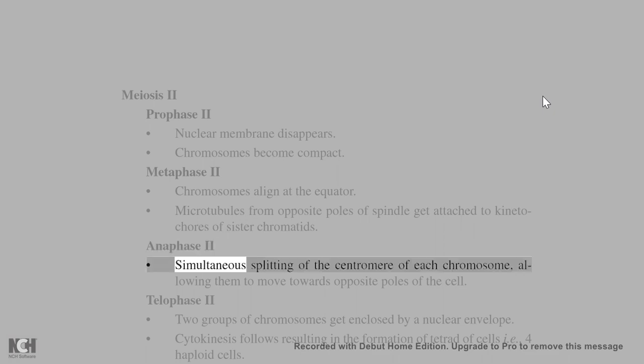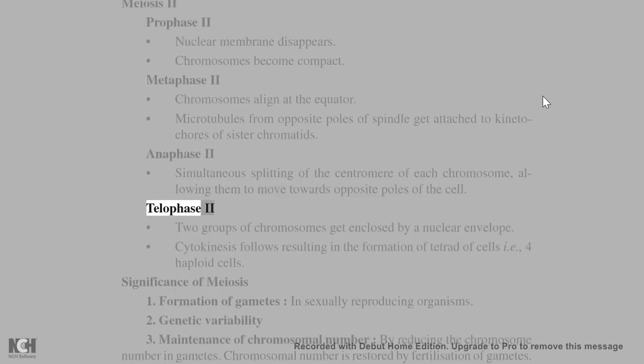Anaphase II: Simultaneous splitting of the centromere of each chromosome, allowing them to move towards opposite poles of the cell. Telophase II: Two groups of chromosomes get enclosed by a nuclear envelope.